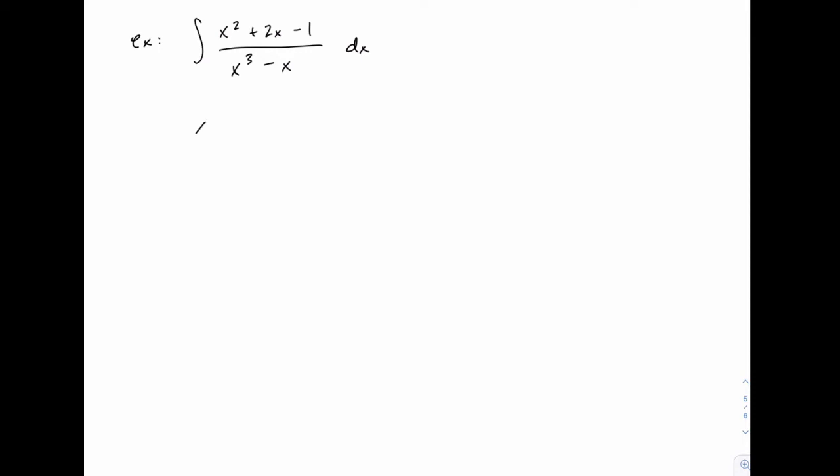The majority of the process is the algebra of decomposing this rational function x squared plus 2x minus 1 over x cubed minus x into its simpler partial fractions. Once we do that, the actual integration step will be pretty quick and easy.